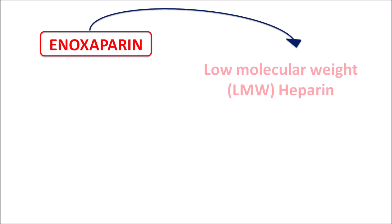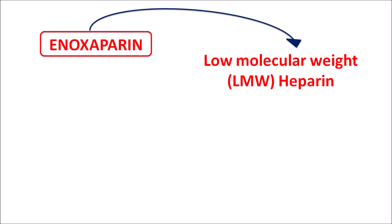Today let us talk about enoxaparin. The suffix '-parin' indicates that this drug belongs to the category of heparins, which is one of the natural anticoagulants. Enoxaparin is a low molecular weight heparin and it acts as an anticoagulant, thereby reducing the clotting process.